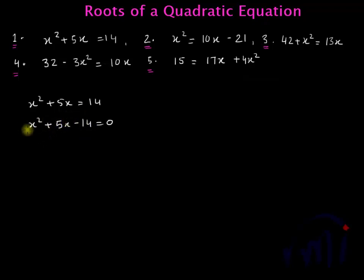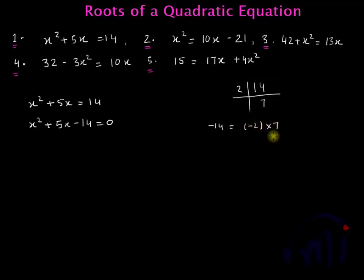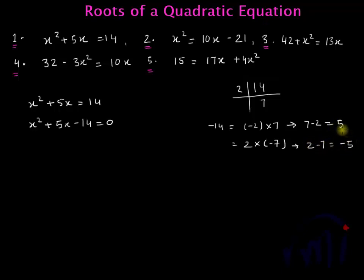Here the coefficient of x squared is 1 and the constant is minus 14. So I'll find all the factors of minus 14. Taking positive 14: two 7s are 14, and these are prime numbers. So minus 14 can be written as minus 2 multiplied by 7, or as 2 multiplied by minus 7. From these, 7 minus 2 gives 5 and 2 minus 7 gives minus 5. Since the coefficient of x is 5, I'm going to use minus 2 and 7 as the two factors.